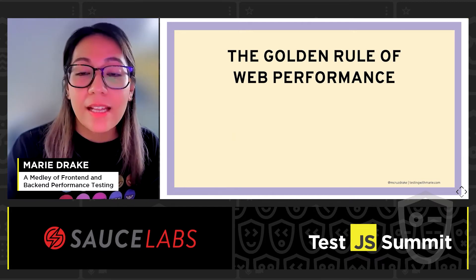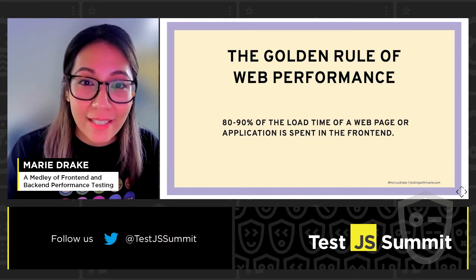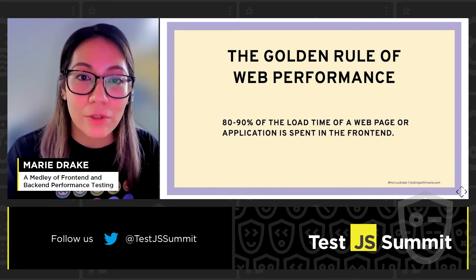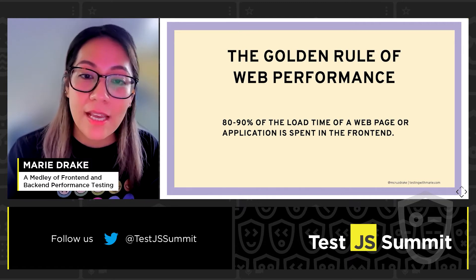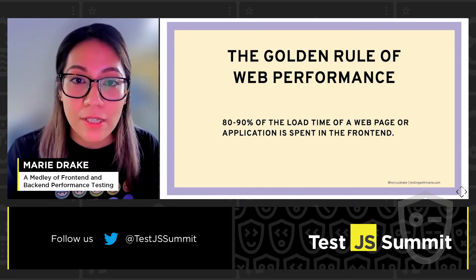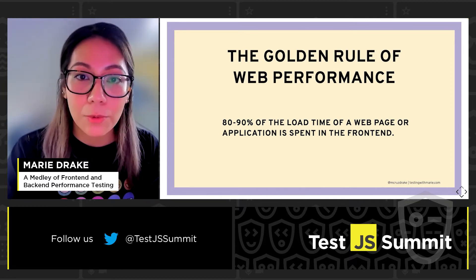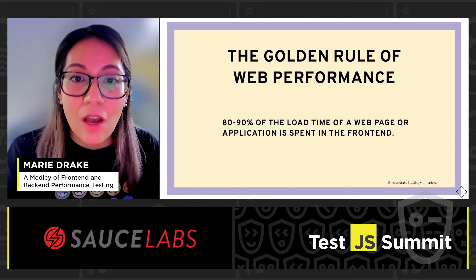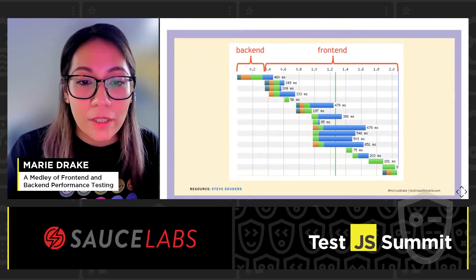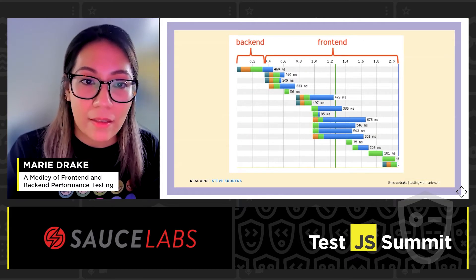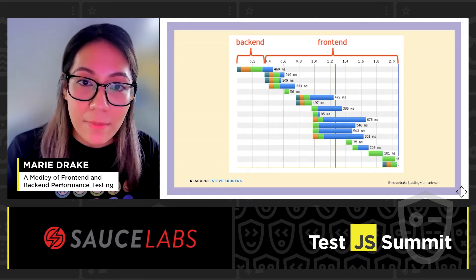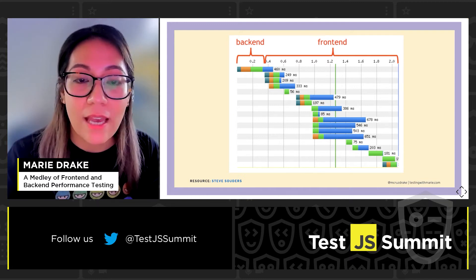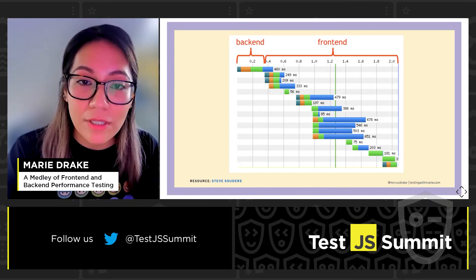With different types of performance testing you might wonder if there is a priority as to which one is more important. The answer, as with everything, is that it depends. If we revisit the golden rule of web performance, it states that 80 to 90 percent of the load time of a web page or application is spent in the front-end, while 10 to 20 percent is spent in the back-end.